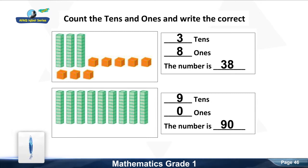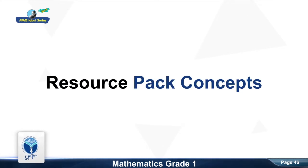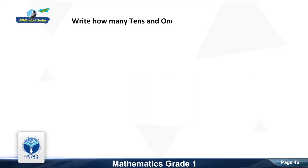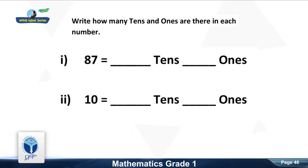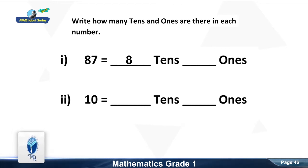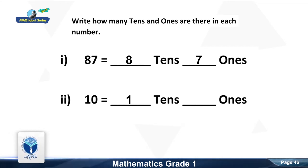Now we move to the next resource pack concept. Write how many tens and ones are there in each number. How many tens in eighty-seven? Good, eight. How many ones in eighty-seven? Good, seven. How many tens in ten? Good, one. How many ones in ten? Good, zero.